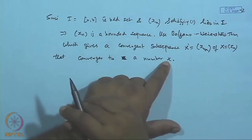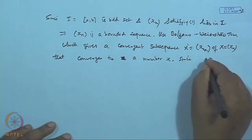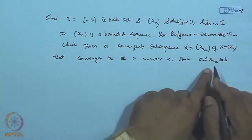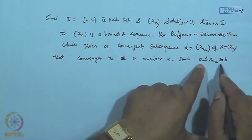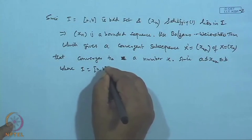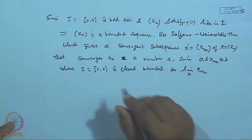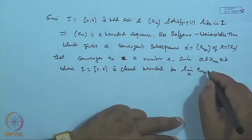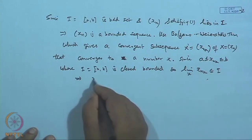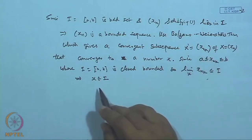This limit point x obviously belongs to I. Since all terms of the subsequence x_{n_k} lie between a and b, and I is a closed interval, the limit of this sequence cannot exceed these bounds and will always lie between them. Since I is a closed bounded interval, the limit point of the subsequence belongs to I.